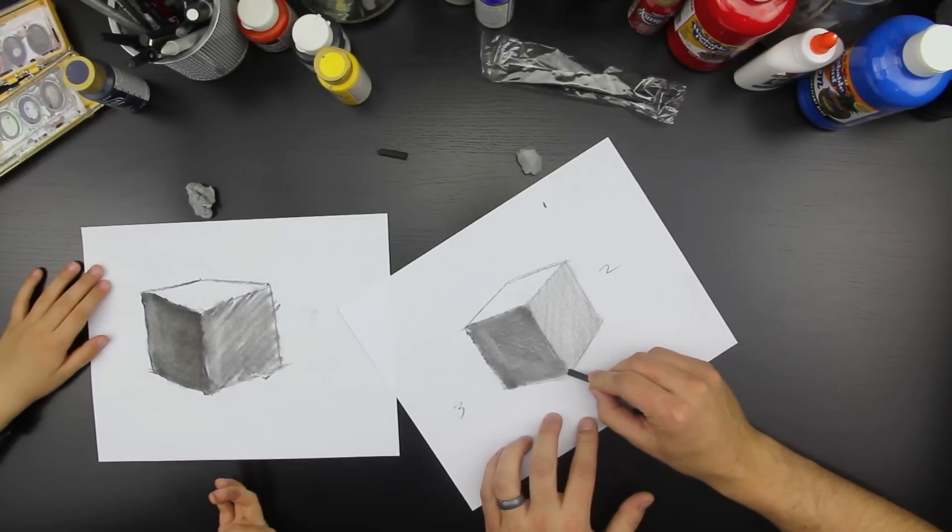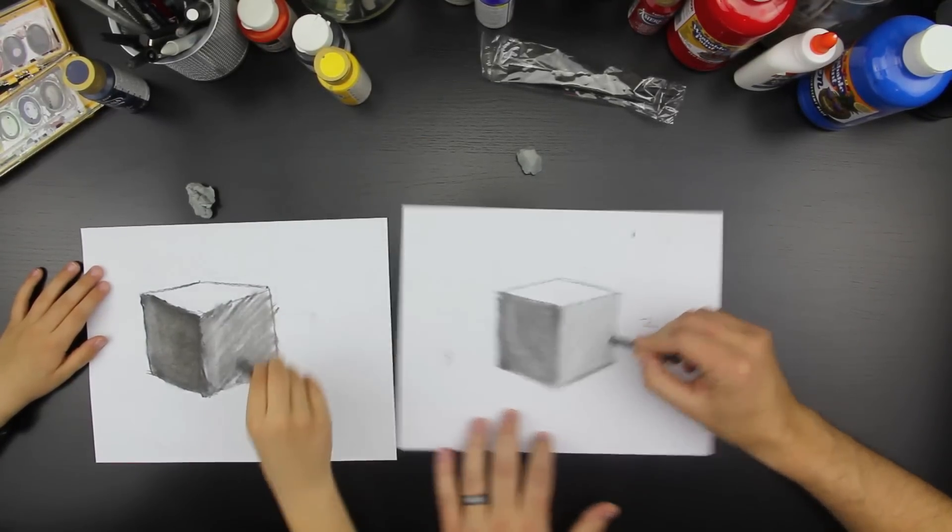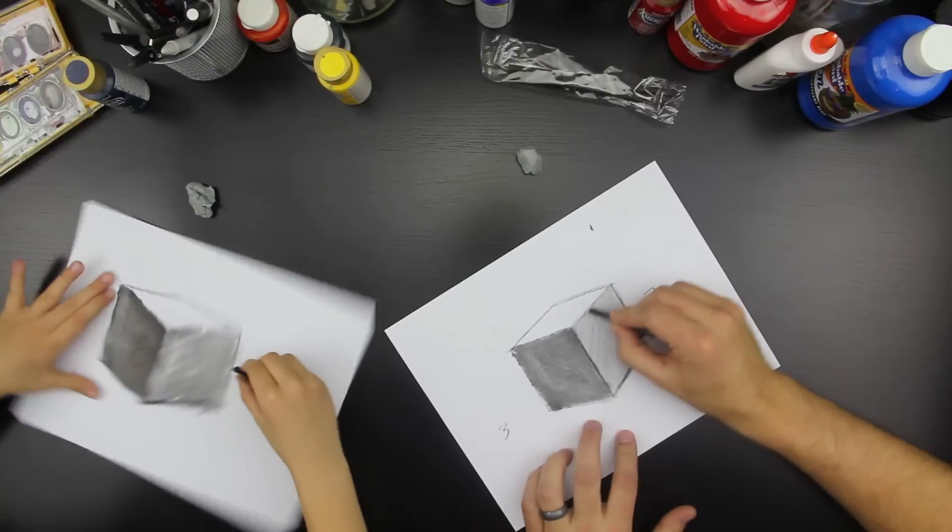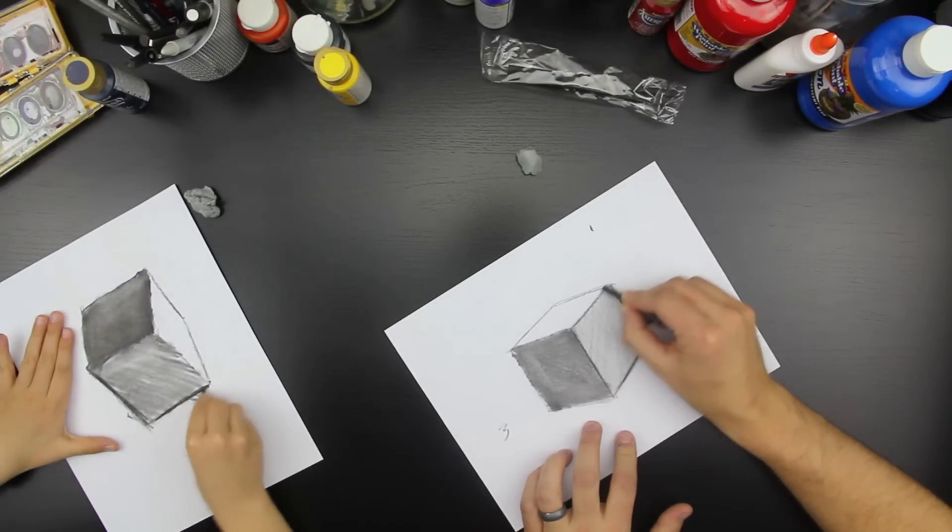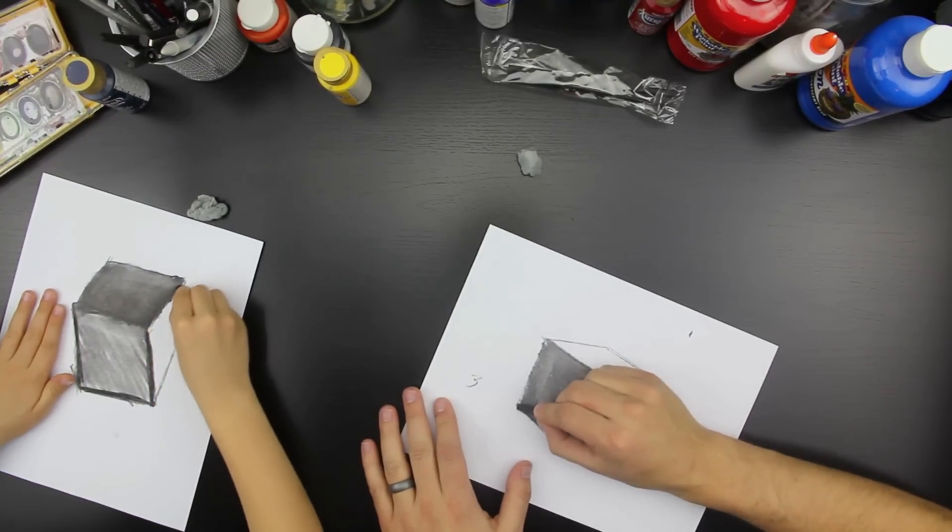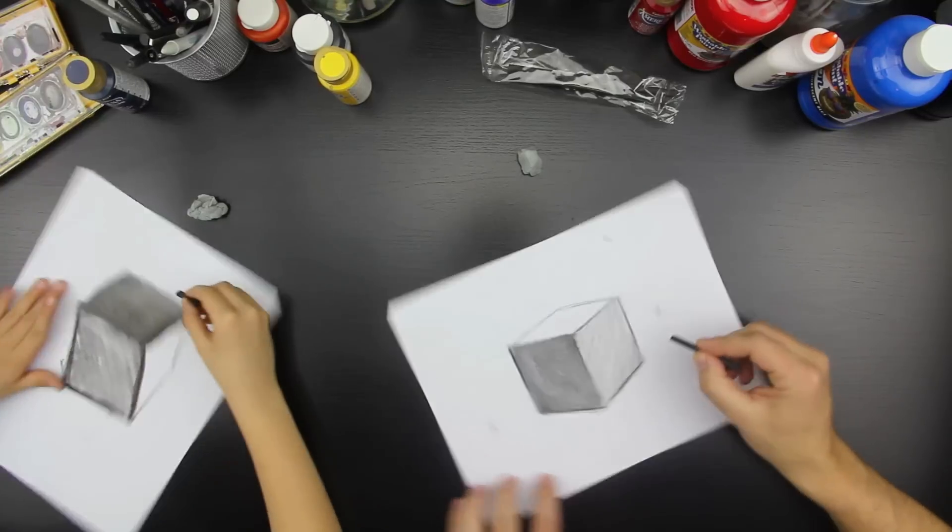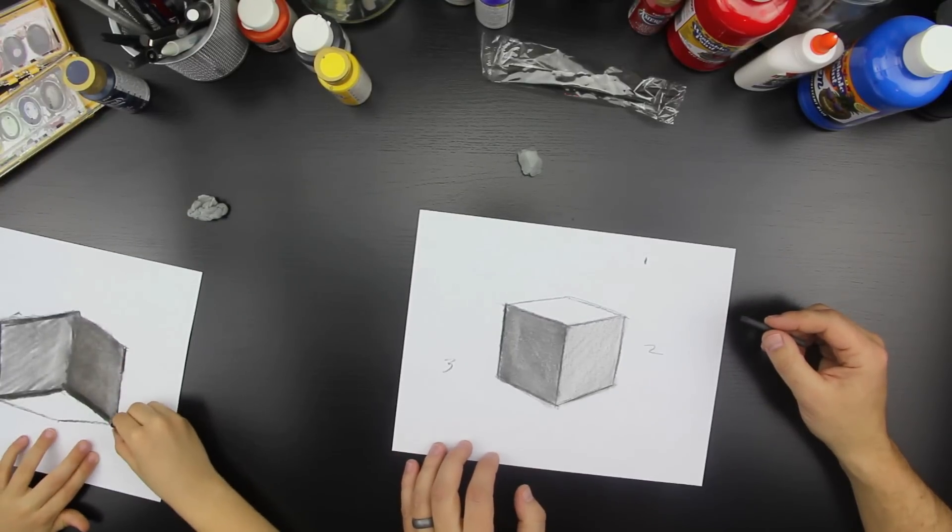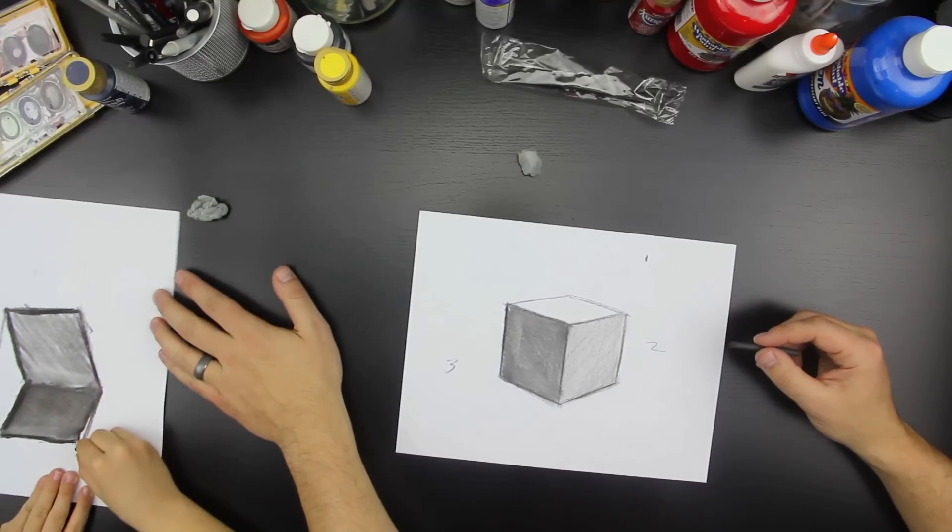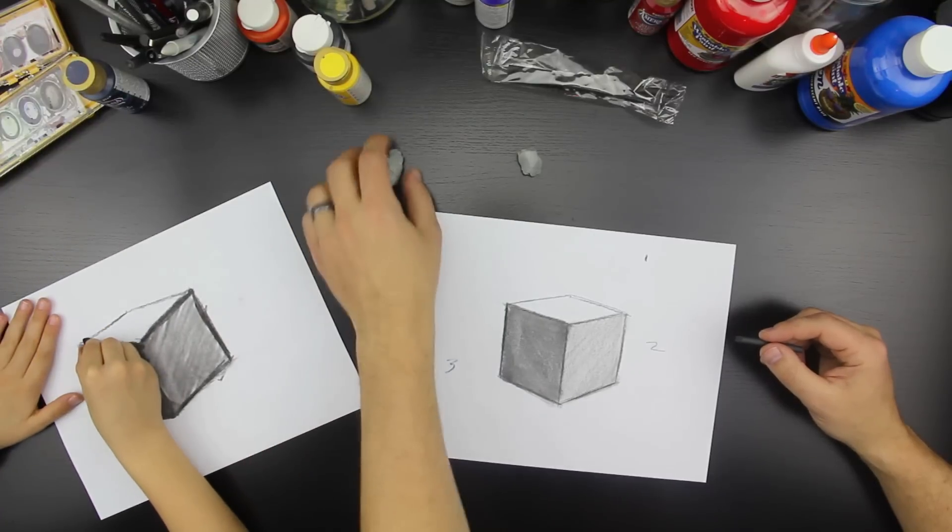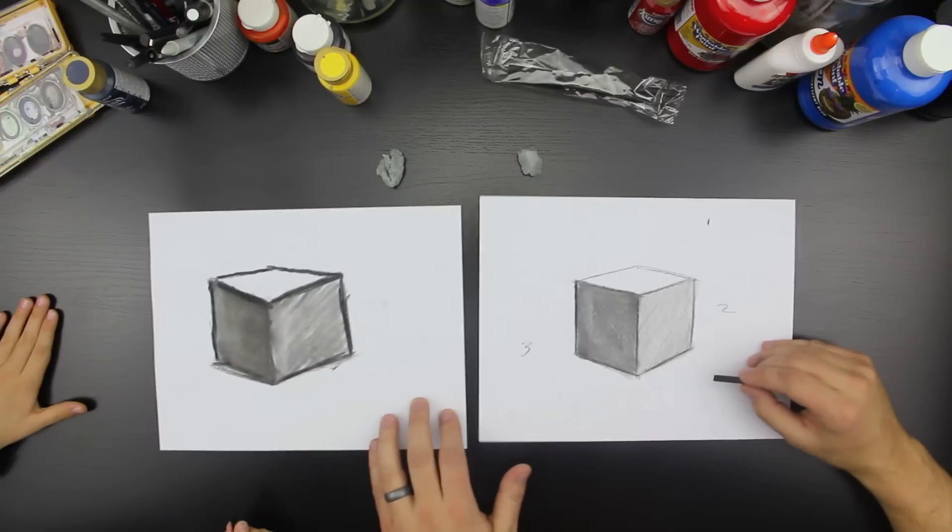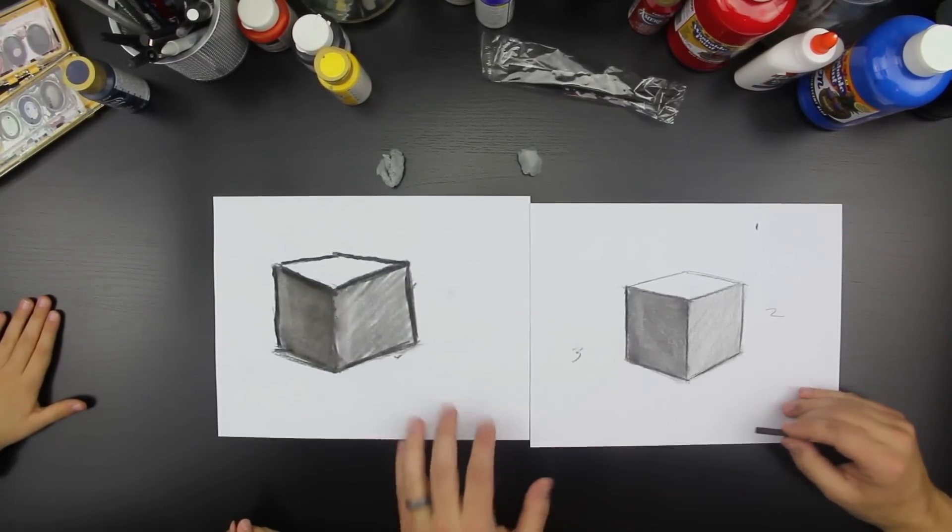So one little thing we could do is just go back around the box. Because we rubbed our finger on the paper, it took some of the charcoal off. So we could just go back over and make those edges a little darker. Good job! You did it! Awesome! Look at that! It looks 3D, huh?